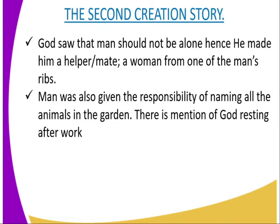In the Garden of Eden, God saw that man should not be alone. He made him a helper, or a mate — a woman from one of the man's ribs. Man was also given the responsibility of naming all the animals in the garden.